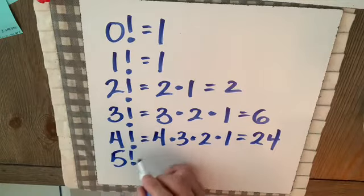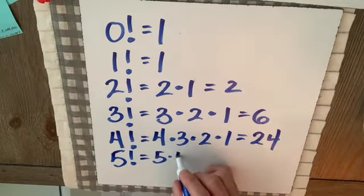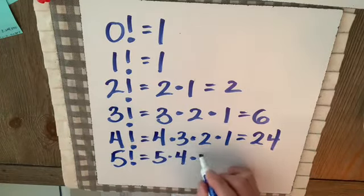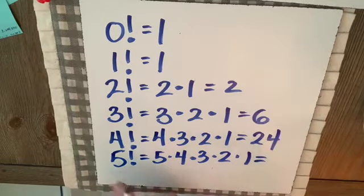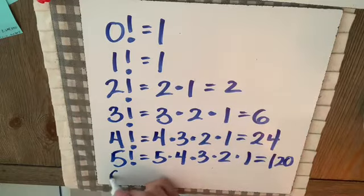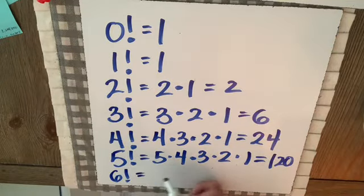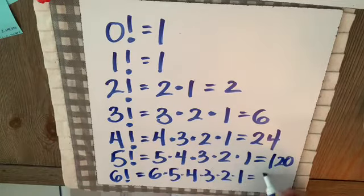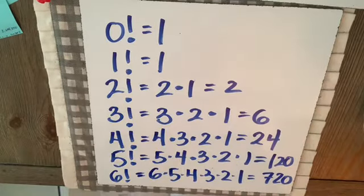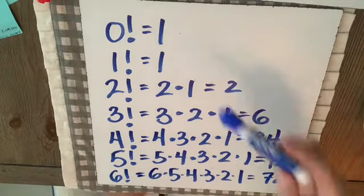5 factorial is 5 times 4 times 3 times 2 times 1, which is essentially 24 times 5, or 120. 6 factorial is 6 times 5 times 4 times 3 times 2 times 1, which is 720. These are pretty good ones to know off-hand.